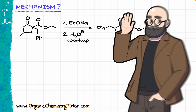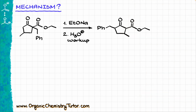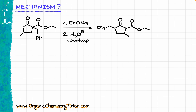Hey everyone, Victor here, and today I have another awesome mechanism for you. Looking at my starting material and my product, it looks like a benzyl group and a methyl group have jumped around, but there are no simple rearrangements where alkyl groups can just move around the molecule, unless it's a carbocation rearrangement. But we are working in basic conditions, so we are unlikely to see any carbocation here.